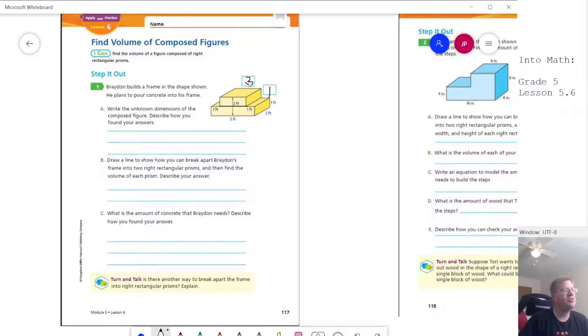So for the top section, we are going to be going three times one times two from front to back for a total of six. And then we're going to be doing five times two times one for 10 to get a total of 16 cubic feet. And so that also would come down here.